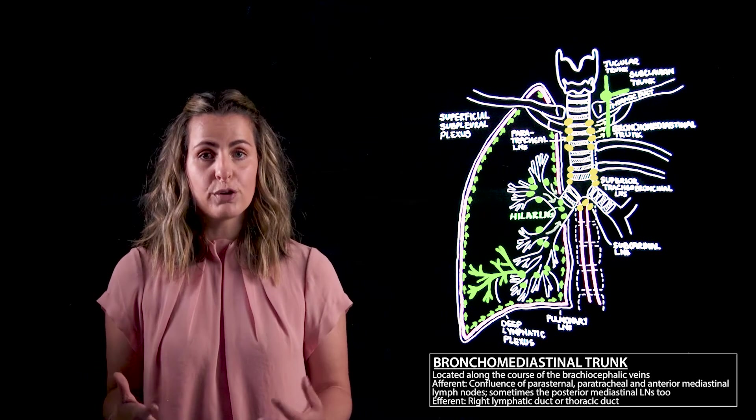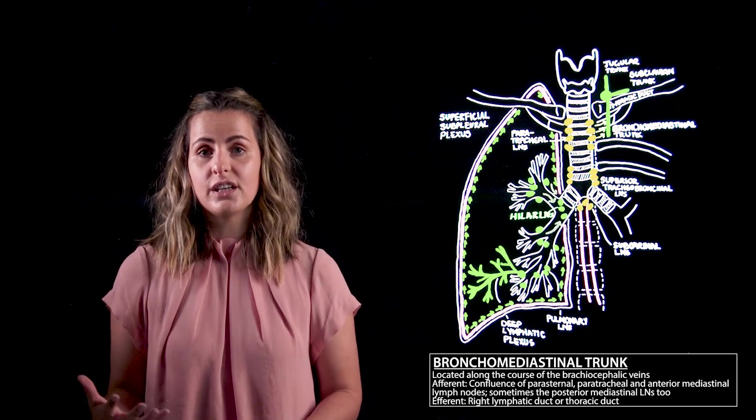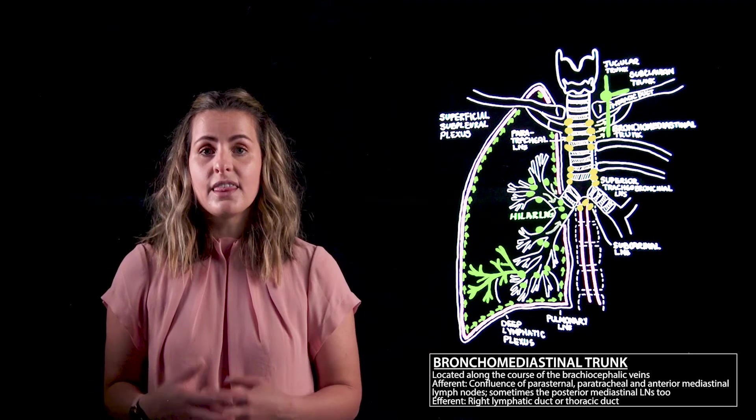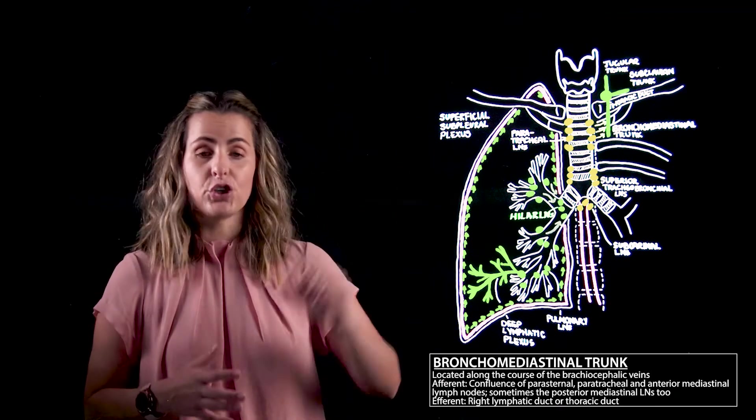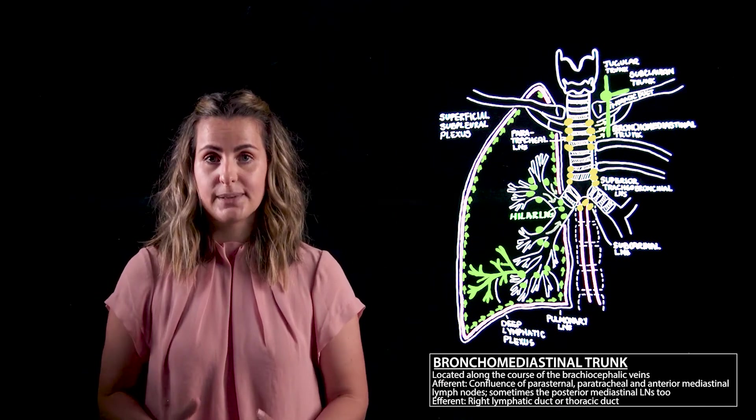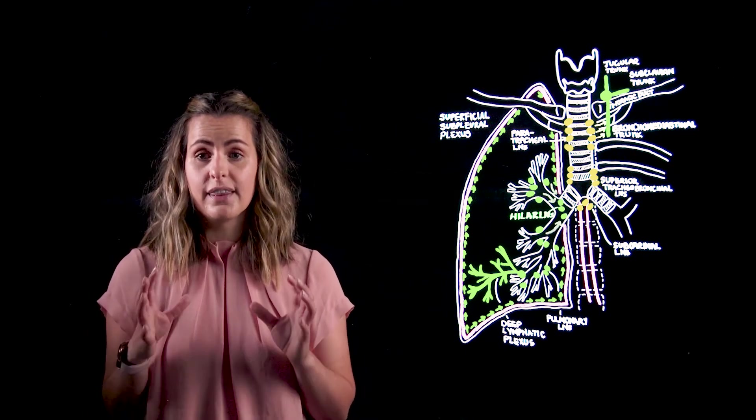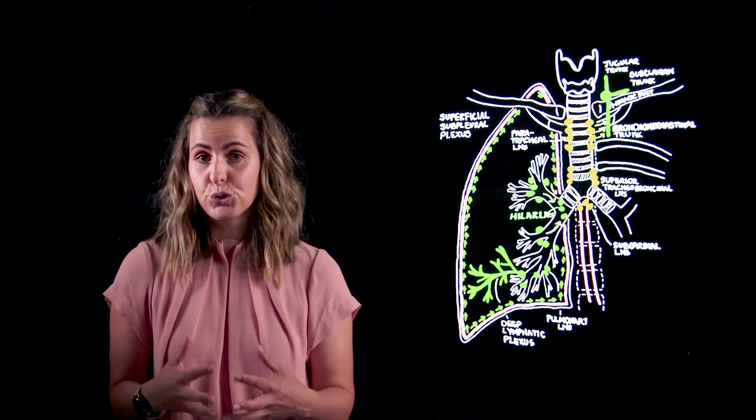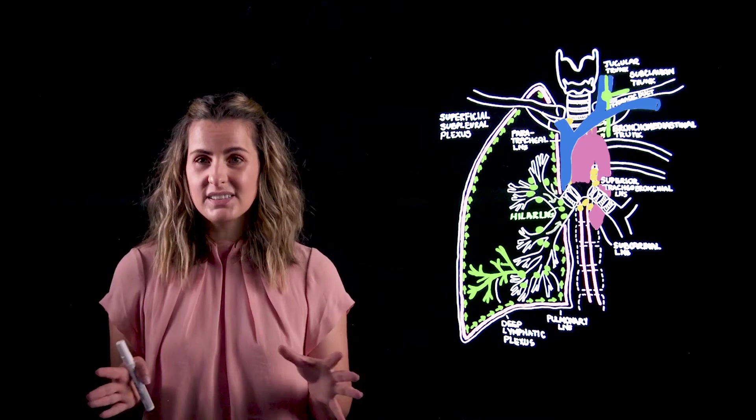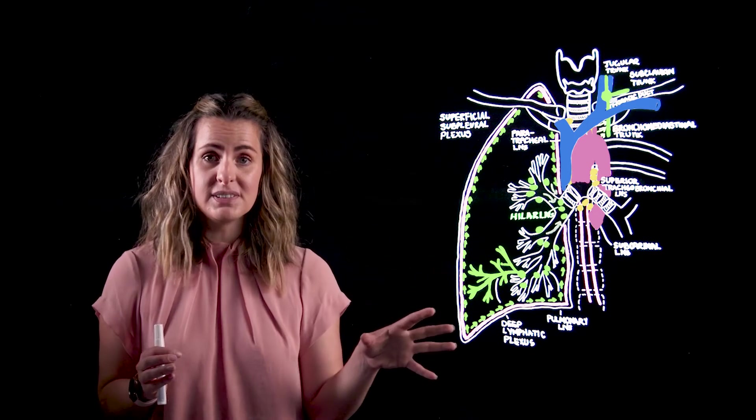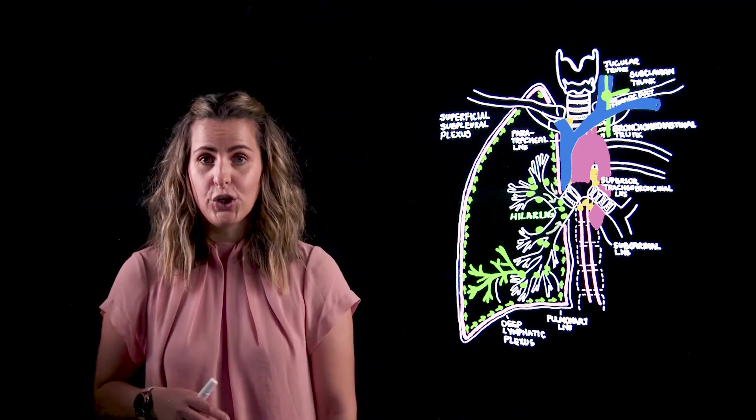You will recall from my other videos that the subclavian trunk drains the axilla and breast while the jugular trunk drains the head and neck. These are also going to drain into those major ducts at this location. Now that we've covered the lymphatic drainage of the lung tissue and the trachea, I'm now going to superimpose some of our great vessels on our diagram. It's not exactly the prettiest superimposition of great vessels, but I think it will do for the purposes of this video.